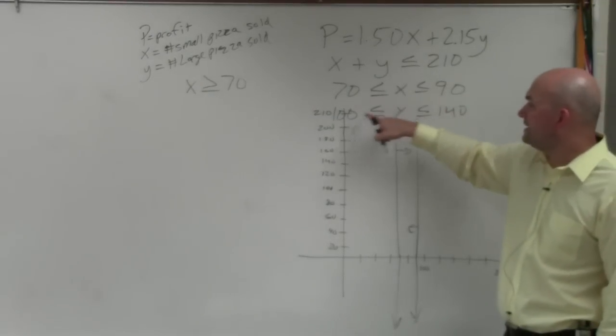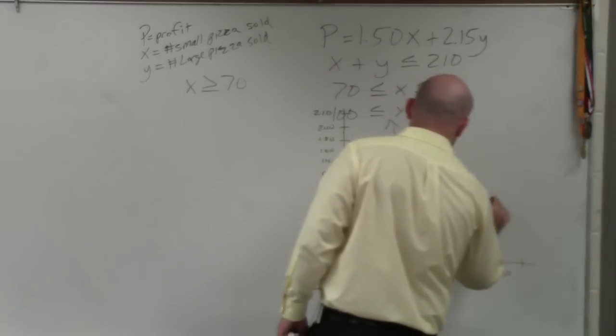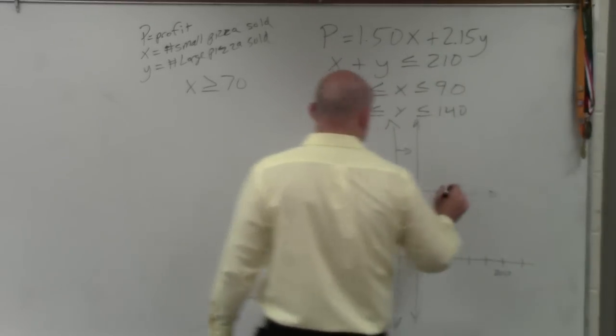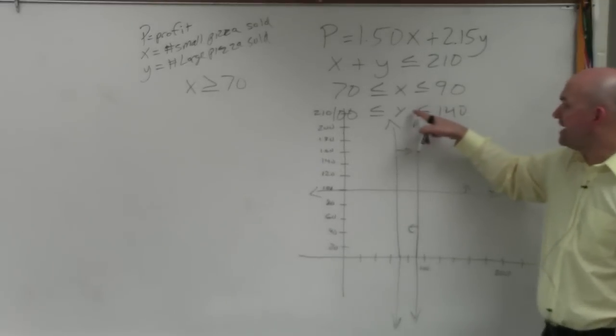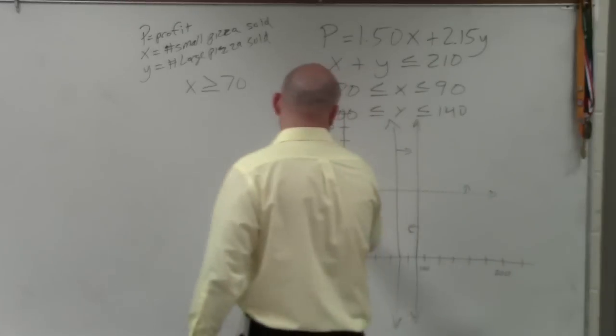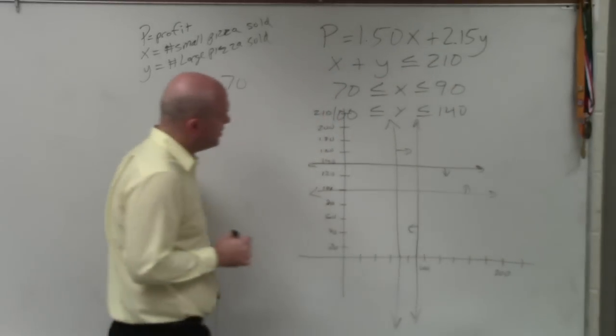Then, I have y has to be greater than 100. So, now, I'll go over here and draw a nice horizontal line at 100. And that is greater than. So, that's going to be all values up. And then, y has to be less than 140, which is a horizontal line right there. And that's all the values that are below.